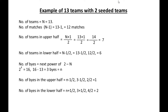This is the example of 13 teams with two seeded teams. The number of teams is 13. The number of matches is N minus 1, that is 12 matches. Number of teams in the upper half is N plus 1 by 2 — 13 plus 1 by 2 — that comes to 7. Number of teams in the lower half is N minus 1 by 2 — 13 minus 1 by 2 — that comes to 6. The number of byes is the next power of 2 minus the number of teams: 2 to the power of 4 is 16, and 16 minus 13 is 3, so the byes are 3. Number of byes in the upper half is N minus 1 by 2, which comes to 1. Number of byes in the lower half is N plus 1 by 2, which comes to 2.